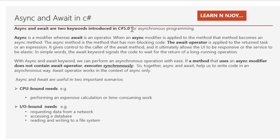Async and await are two keywords introduced in C# 5.0 for asynchronous programming. Whenever we want to write asynchronous code we can use these two keywords. Async is a modifier whereas await is an operator. When an async modifier is applied to a method, that method becomes an async method — a method that has non-blocking code. The await operator is applied to a returned task or expression, and it gives control back to the caller of the async method.